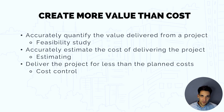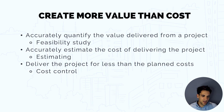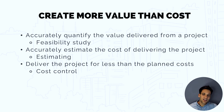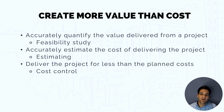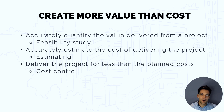To ensure we fulfill the objectives of project cost management, we need to do three things: accurately quantify the value delivered from the project through a feasibility study; accurately estimate the costs of delivering the project scope; and then, during project execution, control costs and spend less than what we budgeted for. If we do those three things, we will fulfill the outcomes of project cost management and ensure our project delivers more value than it costs.